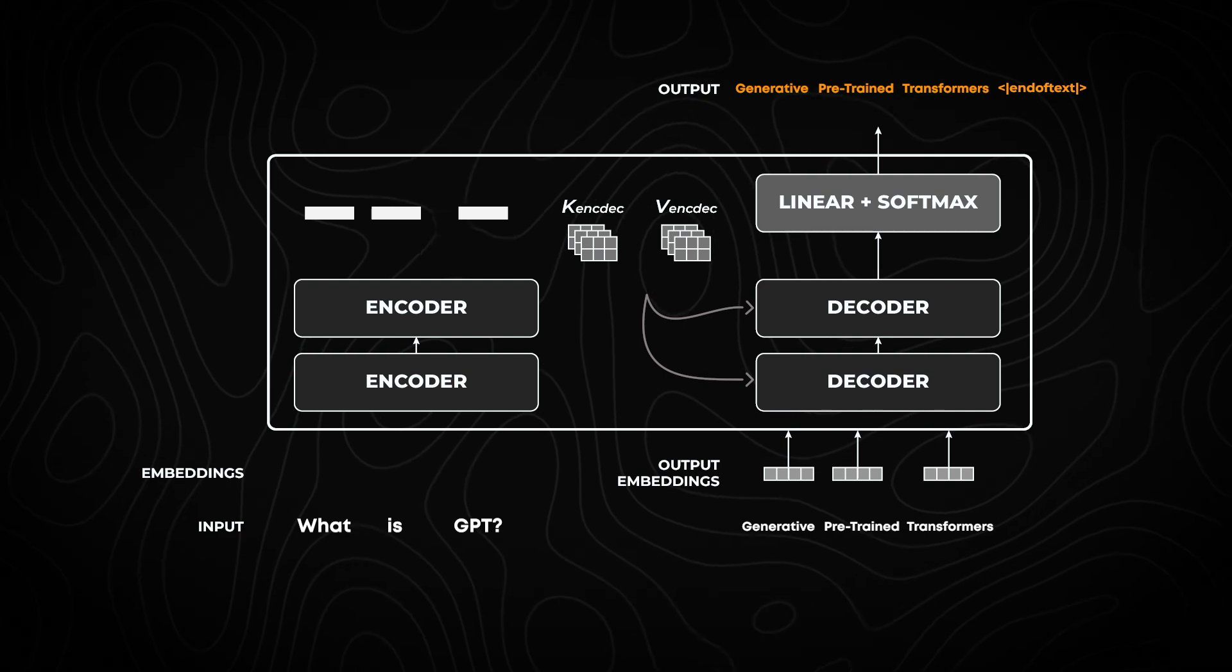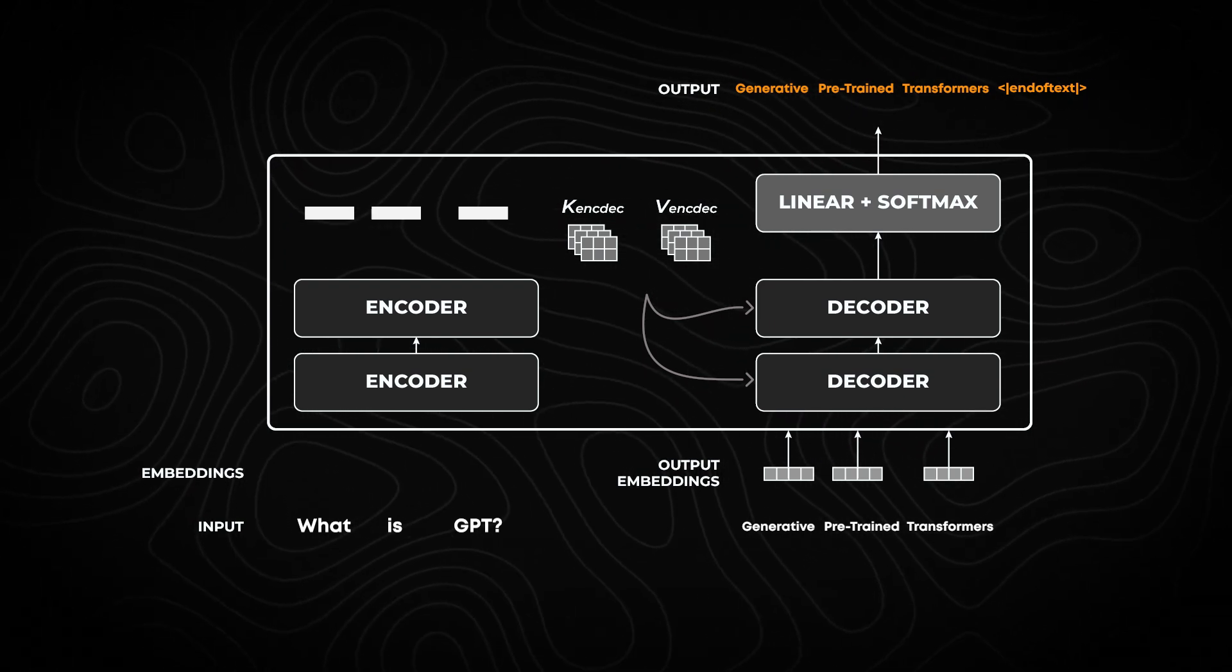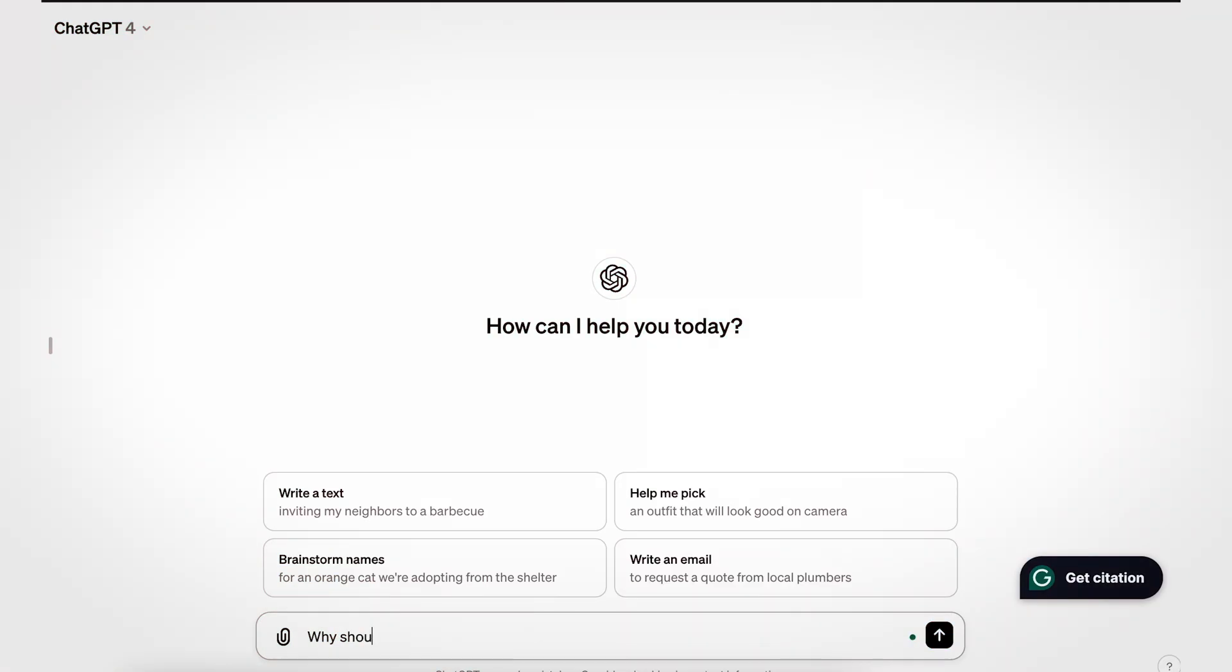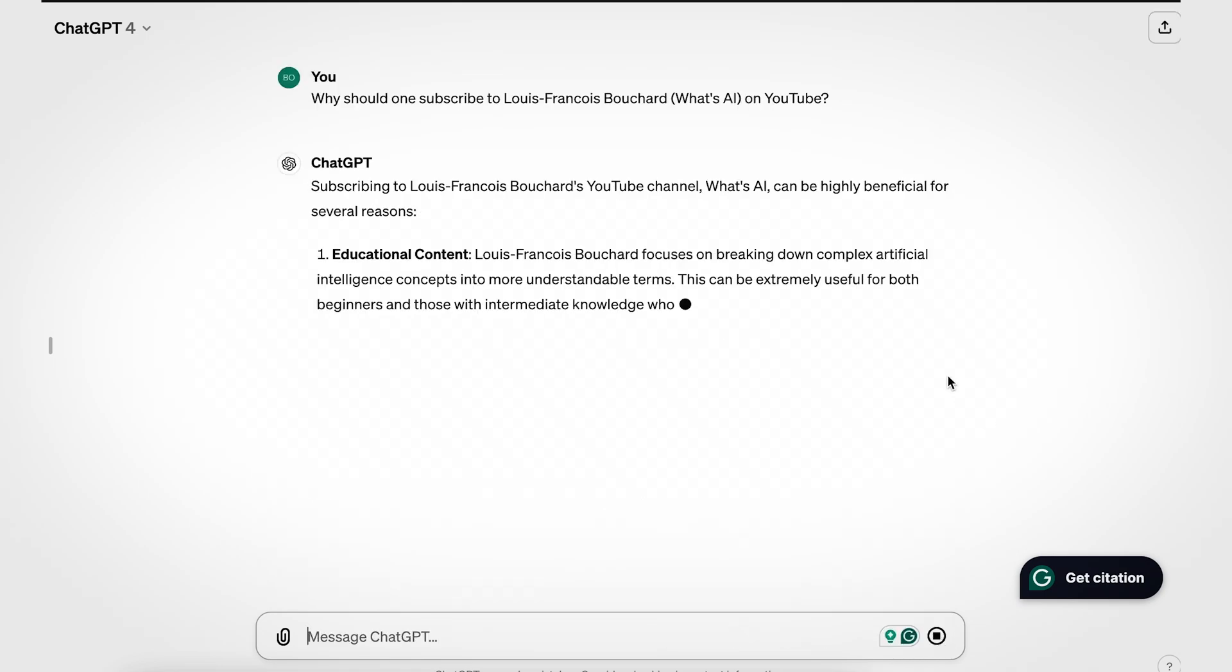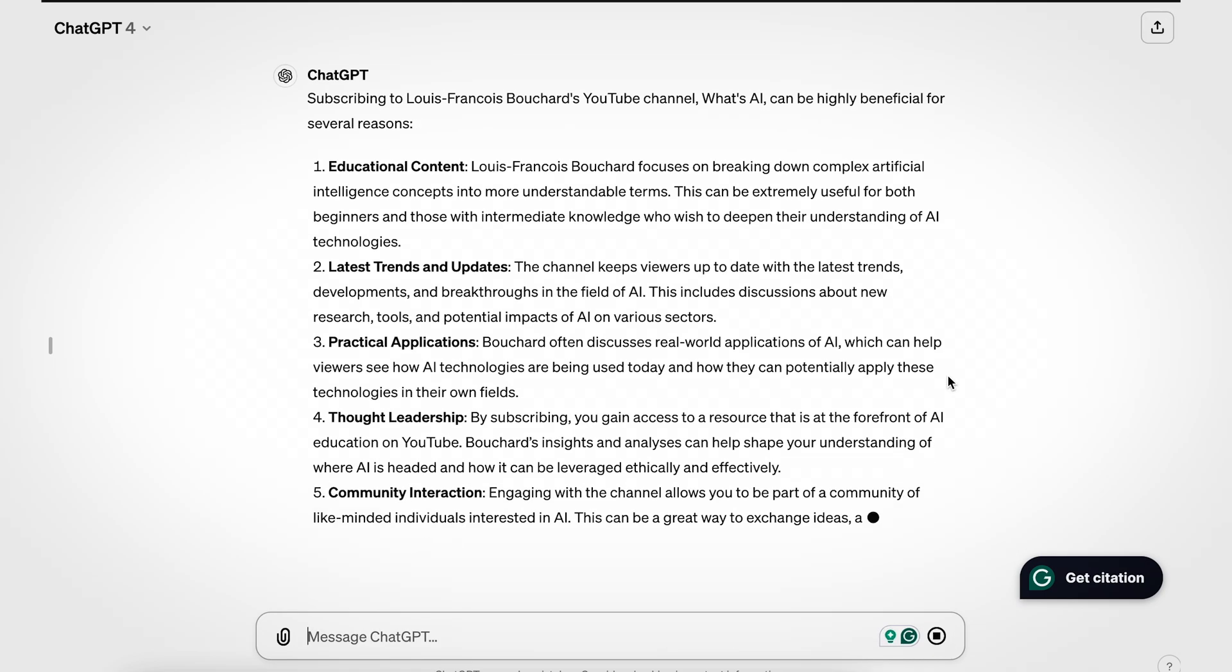This means it will generate the next token, or word, based on all that was sent and generated previously. If you ask why you should subscribe to the channel, it will answer based on what makes most sense from its training data, here the internet, which in this case seems to be by giving a list of reasons to subscribe.